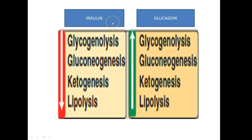Insulin and glucagon act in opposite phases — they are antagonistic hormones. Insulin decreases glycogenolysis, gluconeogenesis, ketogenesis, and lipolysis. Whereas glucagon increases glycogenolysis, gluconeogenesis, ketogenesis, and lipolysis in an exact opposite pattern. In short, insulin is a hypoglycemic hormone whereas glucagon is a hyperglycemic hormone.